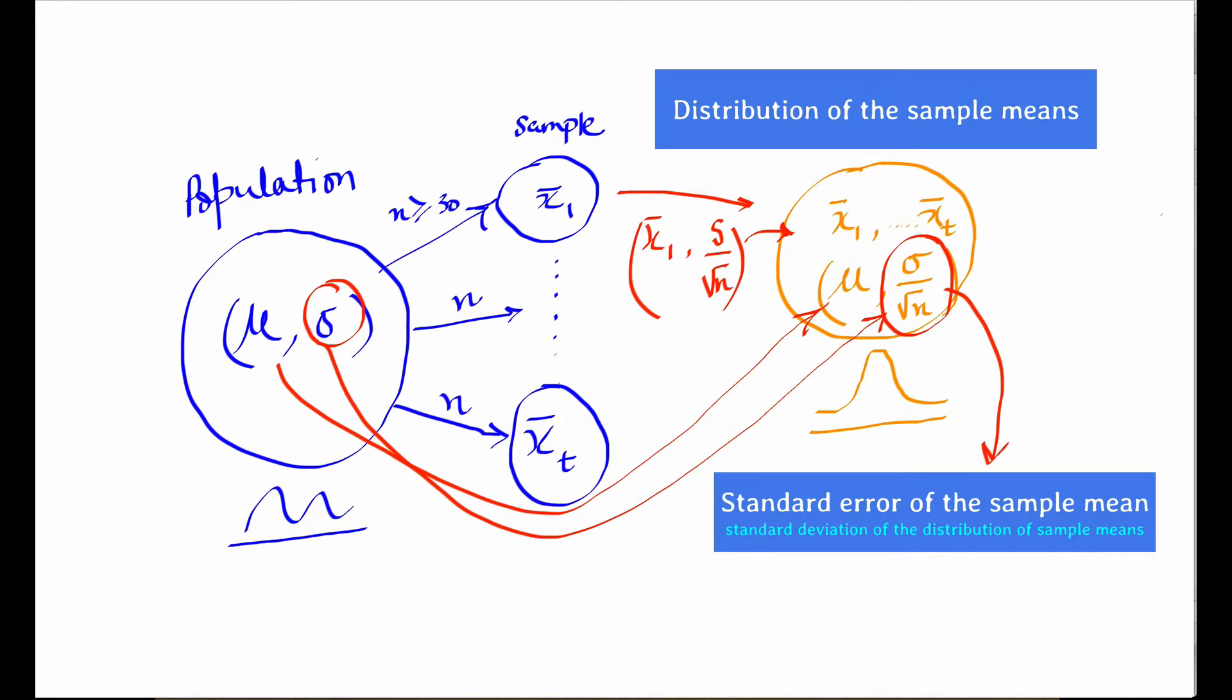So what this means is that as the sample size increases, the sample mean gets closer on average to the true mean of the population. In other words, the distribution of the sample means about the population mean gets smaller and smaller. Let's take a look at a specific example that better illustrates this important theorem.